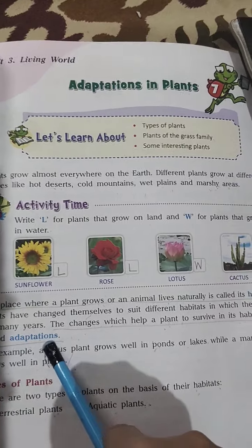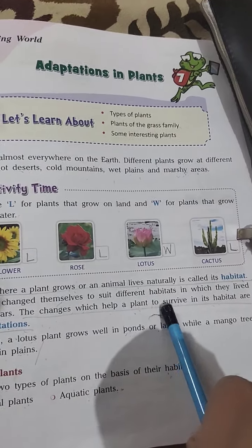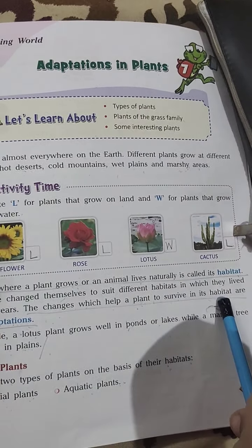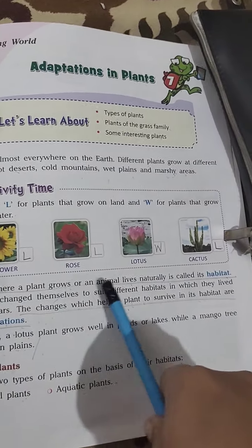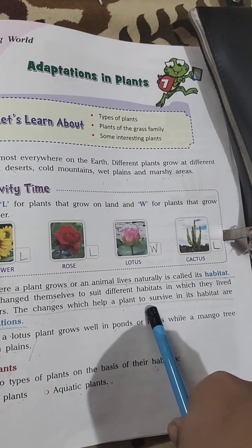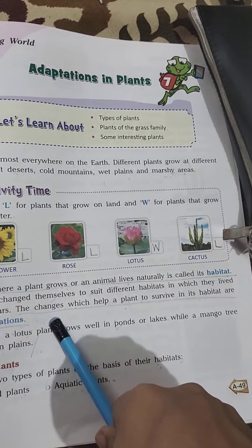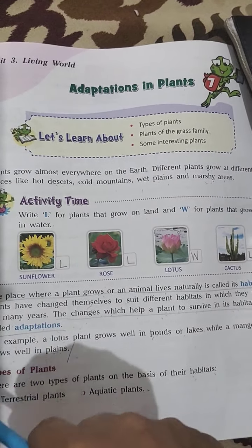Then adaptations. The changes which help a plant to survive in its habitat are called adaptations. Plant apne habitat mein survive karne ke liye jo jo changes leta hai apne andar, that is called adaptations.